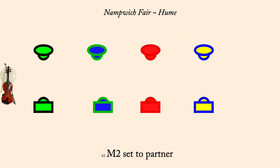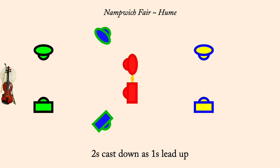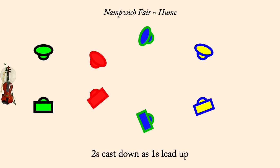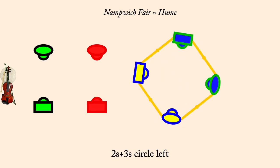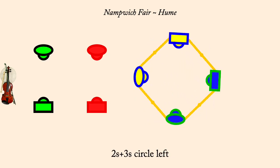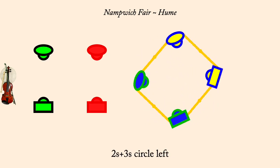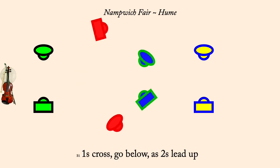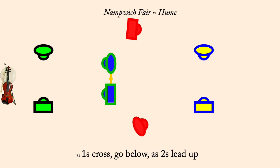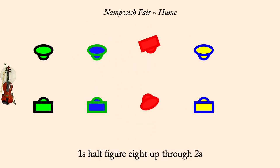Ones cast down as ones lead up. Ones and threes circle left. Ones cross, go below, as twos lead up. Ones half figure eight up through twos.